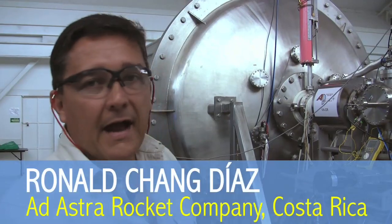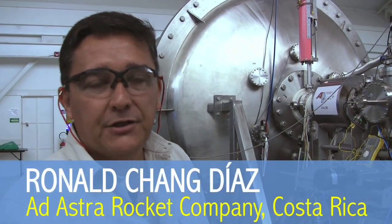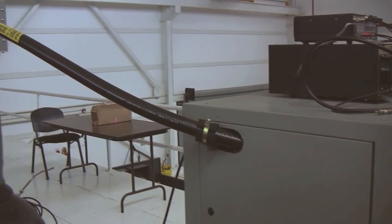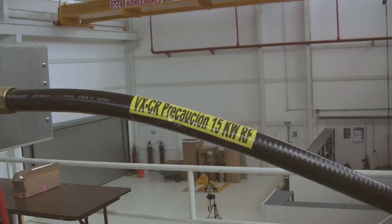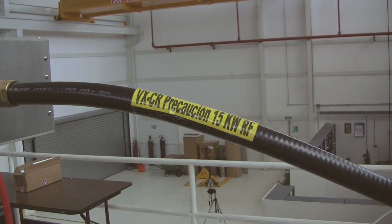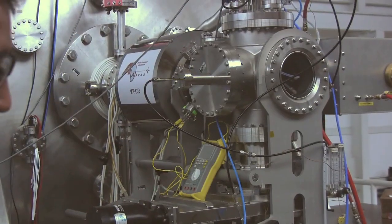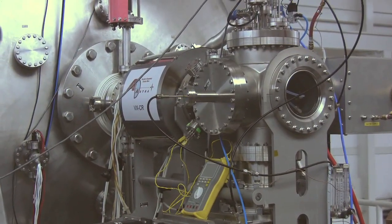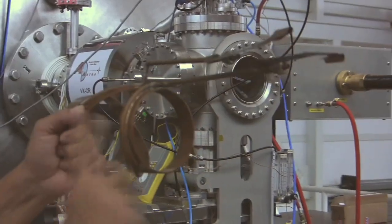This device emulates the first stage of the plasma engine that we are developing in Houston. We are feeding the system with a lot of power to make the plasma from our gun. The rocket will give energy to that gas by this antenna.